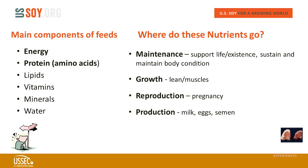What are the components we need to include in feeds? First is energy, second is protein and amino acids, lipids coming from fats and oils, and of course the micronutrients such as vitamins, minerals, and water. All these important components of feeds should be provided to the animals according to their requirements.